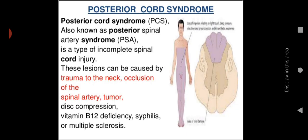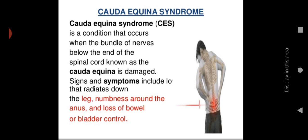Posterior cord syndrome, also known as posterior spinal artery syndrome, is a type of incomplete spinal cord injury. It can be caused by trauma to the neck, occlusion of the spinal artery, tumor, disc compression, vitamin B12 deficiency, syphilis, or multiple sclerosis.